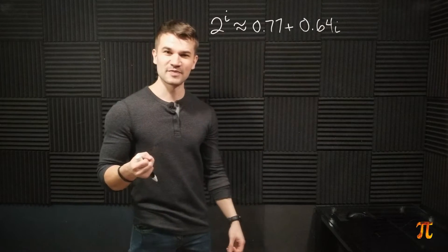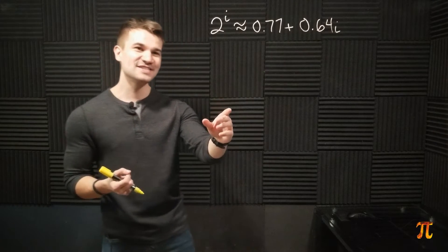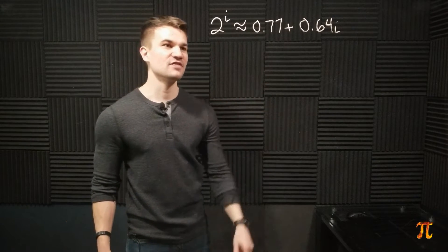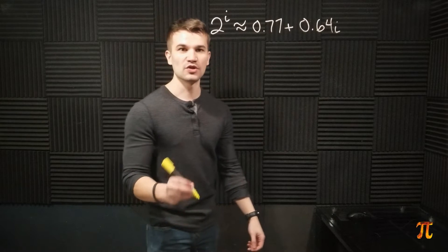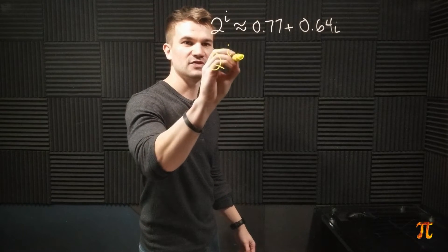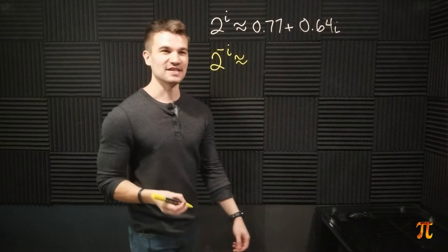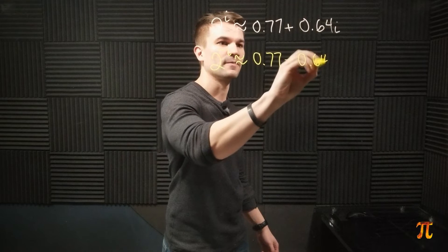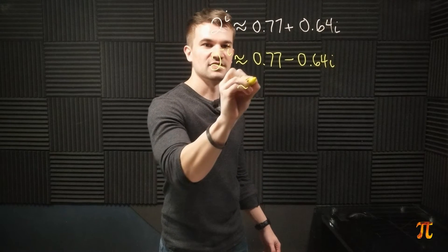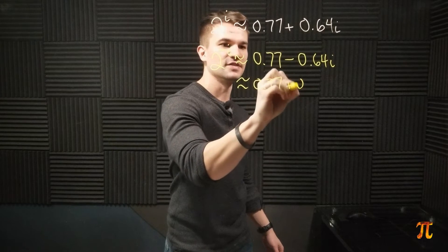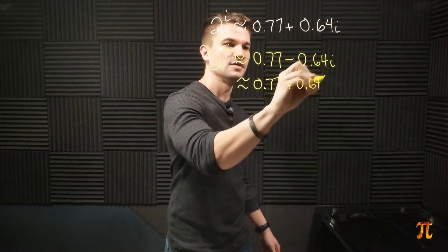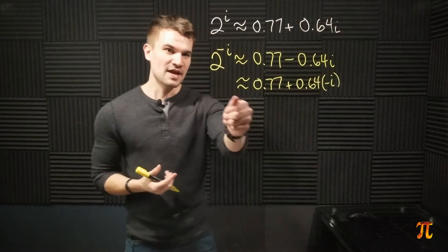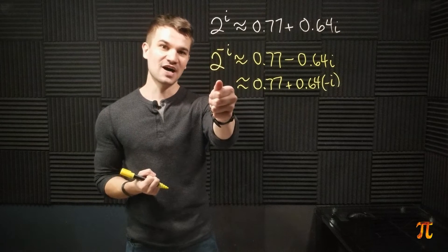Let's look at something a bit weirder. Here we have 2 raised to the i-th power, and that rounds to the complex number 0.77 plus 0.64i. So what do you think 2 to the negative i rounds to? It's 0.77 minus 0.64i, which can be written as 0.77 plus 0.64 times negative i.